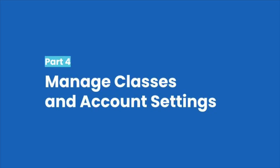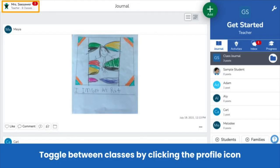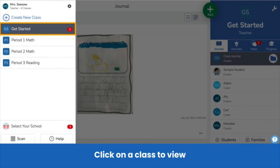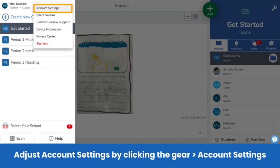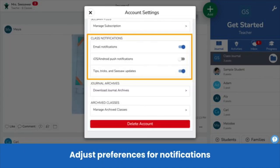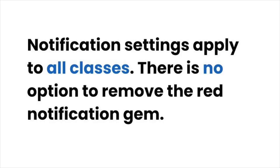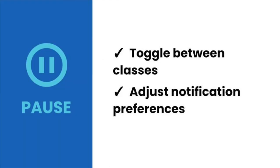Let's explore how co-teachers manage multiple classes and account settings. Click the profile icon — teachers with multiple classes click on a class to view it. Adjust account settings by clicking the gear icon, then Account Settings. Teachers with multiple classes might receive a lot of notifications, so adjust notification preferences in Account Settings. Note that notification settings apply to all classes and there is no option to remove the red notification gem at this time. Pause the video, toggle between classes, and adjust notification preferences.